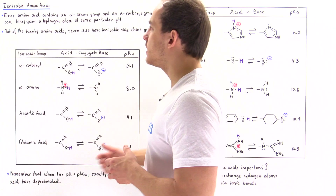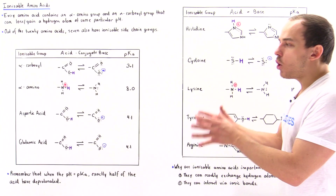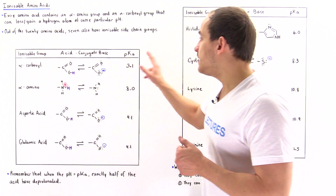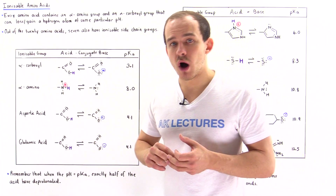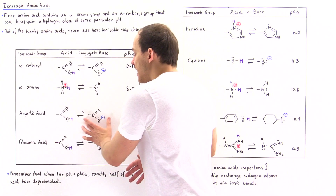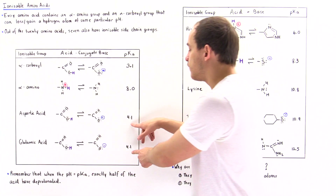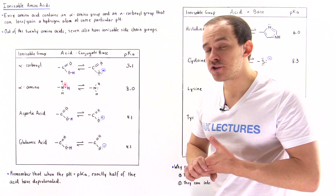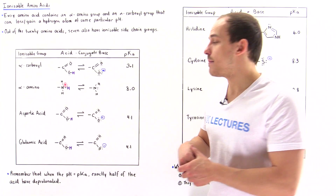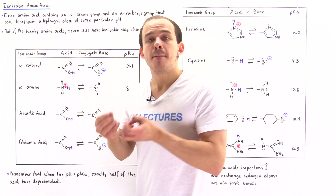Let's focus on the seven amino acids with ionizable sidechain groups, beginning with aspartic acid and glutamic acid. Both of these amino acids contain a sidechain group with a carboxylic acid, and the pKa value of this carboxylic acid is 4.1. At pH 4.1, we have 50% acid and 50% conjugate base. If we're below pH 4.1, the acid form predominates; if we're above pH 4.1, the conjugate base predominates. At normal physiological pH — which is higher than 4.1 — the ion form predominates, giving these amino acids a full negative charge that allows them to form many ionic bonds.